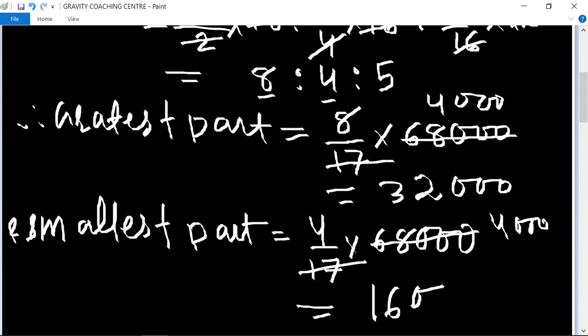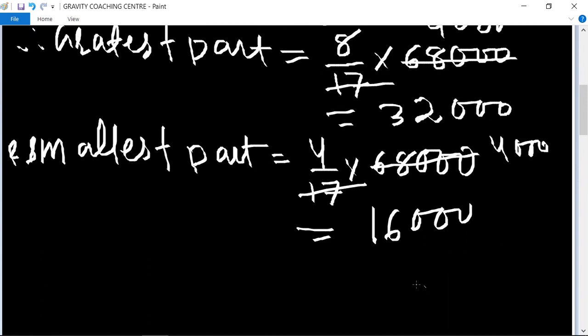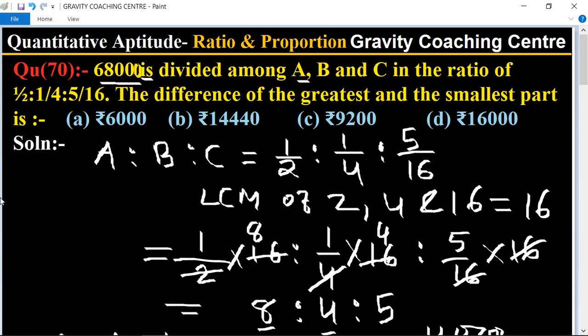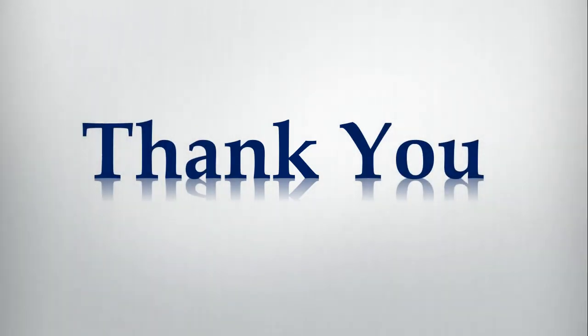So their difference, therefore their difference equal to 32000 minus 16000 equal to 16000 is the required answer. So option D is the required answer.